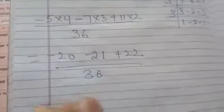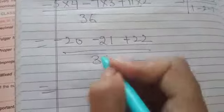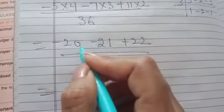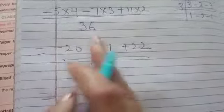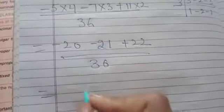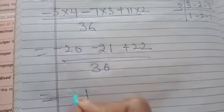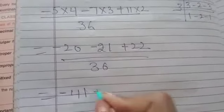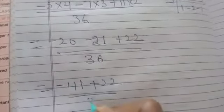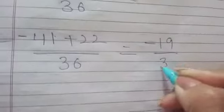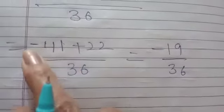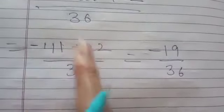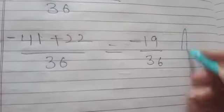Minus 20. Minus 21. Plus 22 over 36. When you will add or subtract it, you will get both the same parties. Then, we will get minus 41 plus 22 over 36. When you will subtract it, you will get minus 19 over 36. Why minus 19? Because, this is the bigger number. When you subtract it, you will get minus 19 as the required answer.